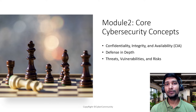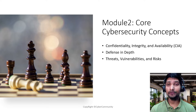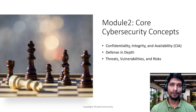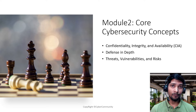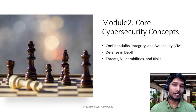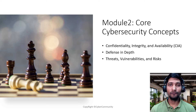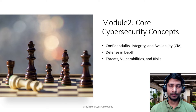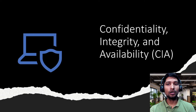In this section we are going to discuss Module 2, which is Core Cybersecurity Concepts. We will talk about the CIA triad — confidentiality, integrity, and availability — which is one of the main pillars of information security. In upcoming videos we'll cover defense in depth, which is one of the most important layers to protect your data and assets, and then threats, vulnerabilities, and risk — including how to calculate risk and the differences between all three.